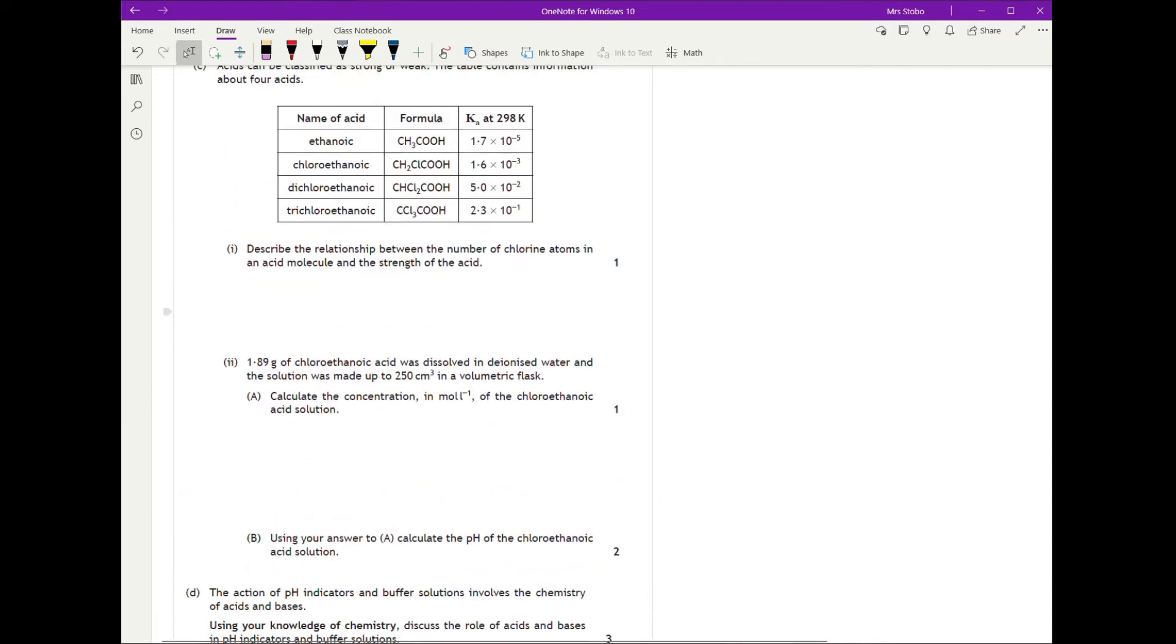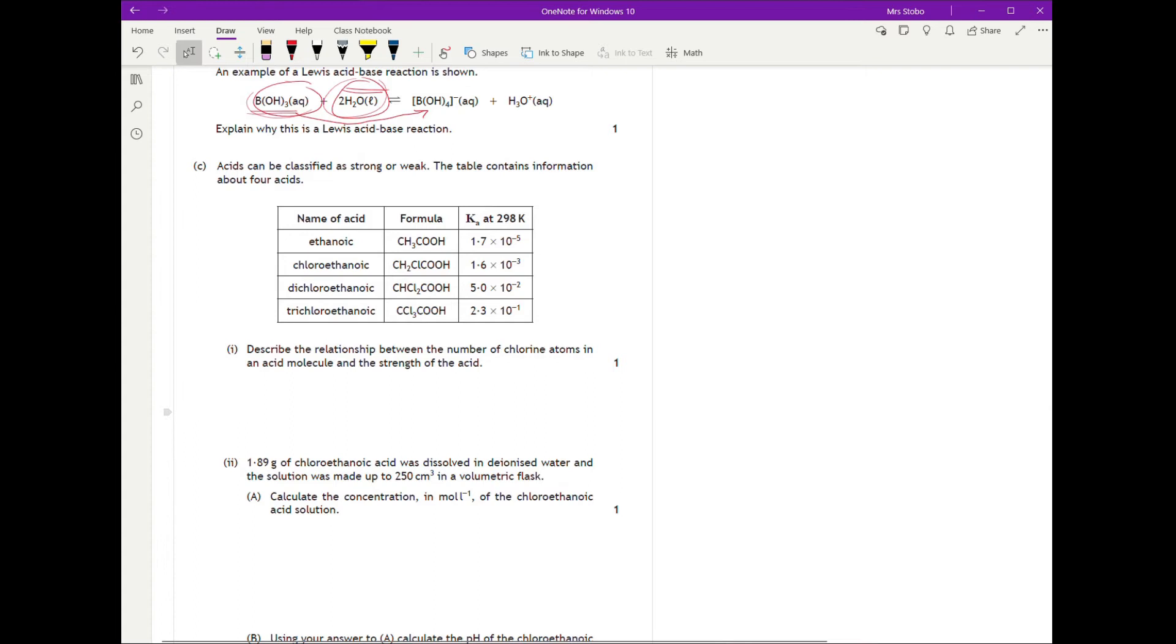So you're going to have to mention both of these species in your answer and that this one has accepted, this one has donated. Right, and then we've got some data on strong and weak acids. We've got information on it. So what we've got to describe the relationship between the number of chlorine atoms in an acid molecule and the strength. So we've got ethanoic with no chlorines, chloroethanoic with one, dichloro and trichloro.